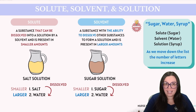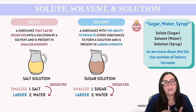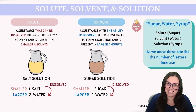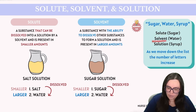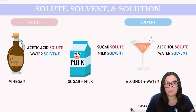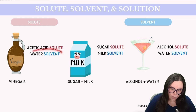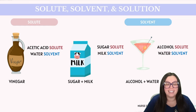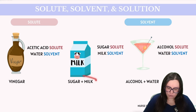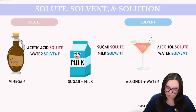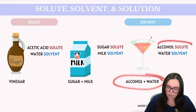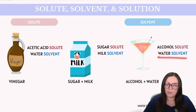It's also easy to recall that as we move down the list of definitions, the number of characters in each word increases: solute has six characters, solvent has seven, and solution has eight. Here are more common examples: in a vinegar solution, acetic acid is our solute and water is our solvent. With sugar and milk, sugar is the solute and milk is the solvent. With alcohol and water, alcohol is the solute and water is the solvent.